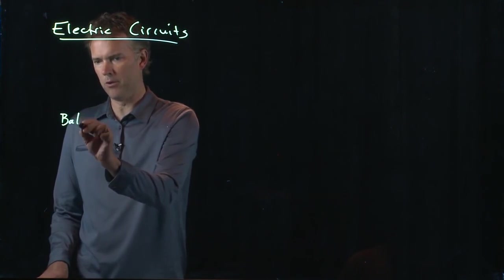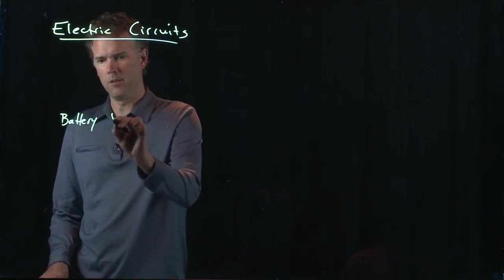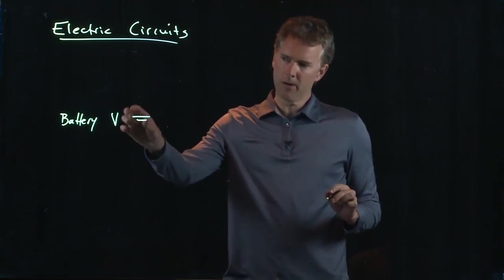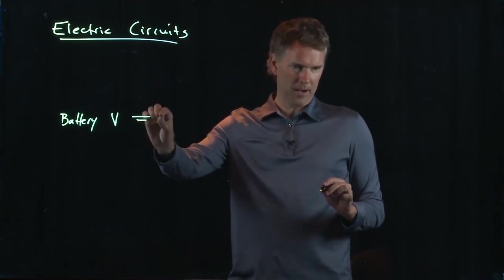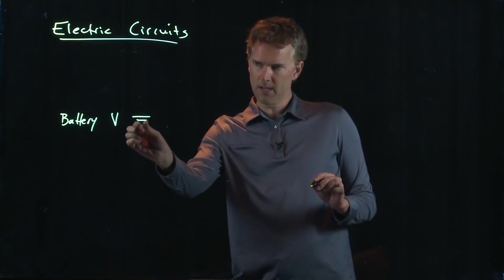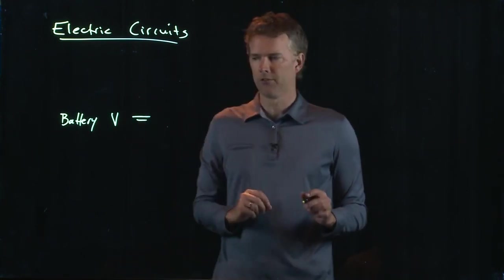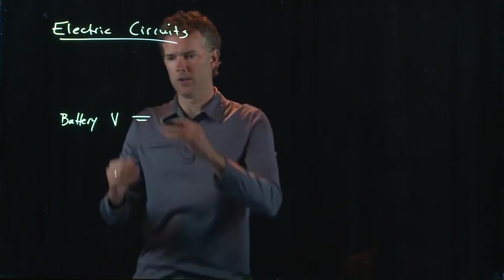You're going to put some sort of battery, V, and typically anytime you write a battery, you always make the long side the positive side, the short side the negative side. Okay, so this is what a battery looks like in a circuit diagram, long bar and short bar.